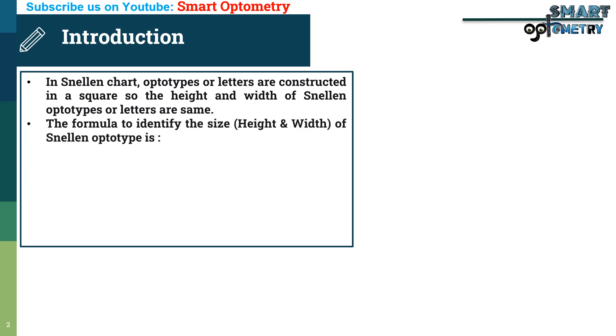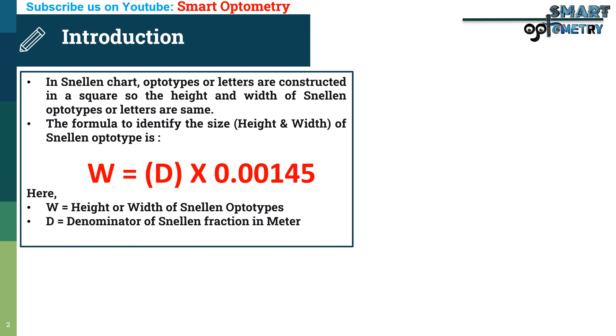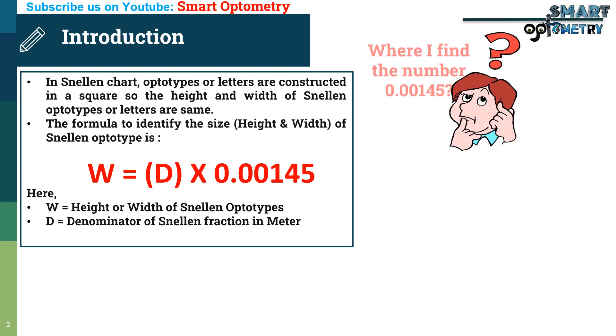The formula to identify the size of Snellen optotype is W equal to D multiplied by 0.00145. Here, W is height and width of Snellen optotypes and D is denominator of Snellen fraction in meter. Now, you might be thinking where does the number 0.00145 come from.